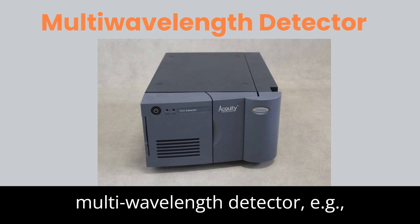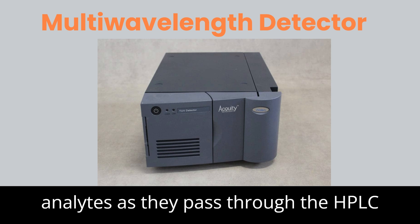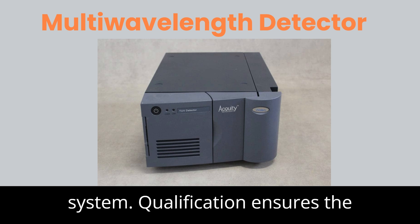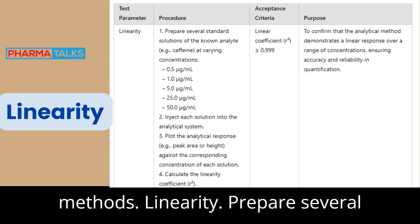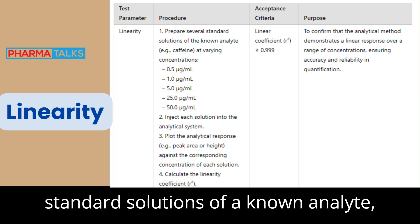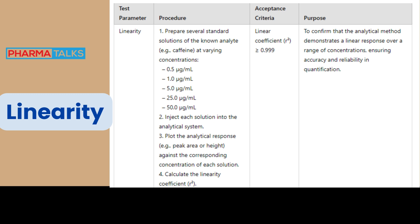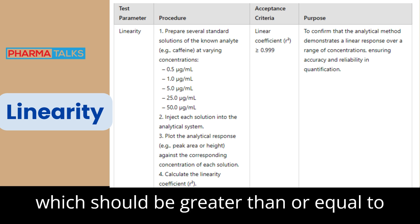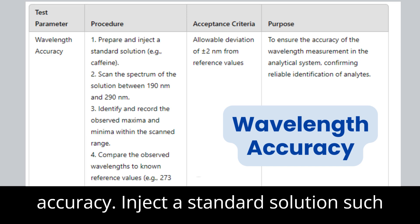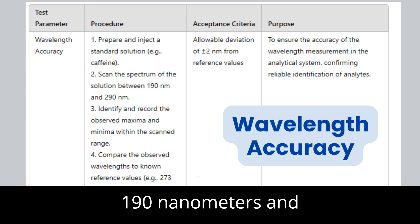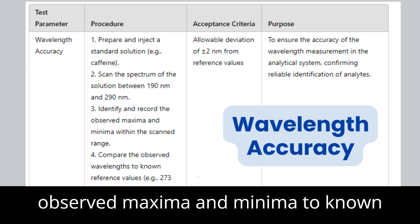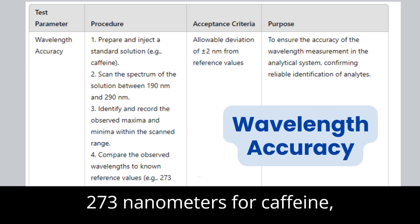5. Multi-Wavelength Detector. A multi-wavelength detector (e.g., UV-Vis detector) monitors analytes as they pass through the HPLC system. Qualification ensures the detector's ability to measure analyte concentrations accurately. Linearity: prepare several standard solutions of a known analyte such as caffeine at different concentrations (e.g., 0.5, 1.0, 5.0, 25.0, 50.0 µg/mL). Inject each solution, plot the response against concentration, and calculate the linearity coefficient, which should be ≥0.999. Wavelength Accuracy: inject a standard solution such as caffeine and scan the spectrum between 190 nm and 290 nm. Compare the observed maxima and minima to known reference values (e.g., 273 nm for caffeine), with the allowable deviation being ±2 nm.